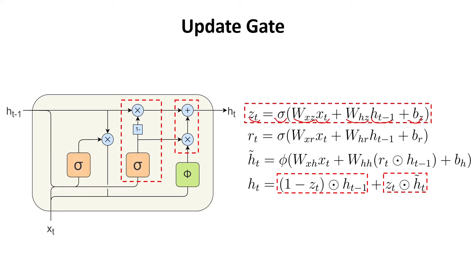What we get are values between 0 and 1, which we use to compute the next hidden state. We multiply Zt element-wise with the candidate hidden state, and also multiply 1 minus Zt with the value of the previous hidden state. In this way, we select what is important from the previous hidden state and what is important from the current candidate hidden state, and transfer everything to the next step as the new hidden state.